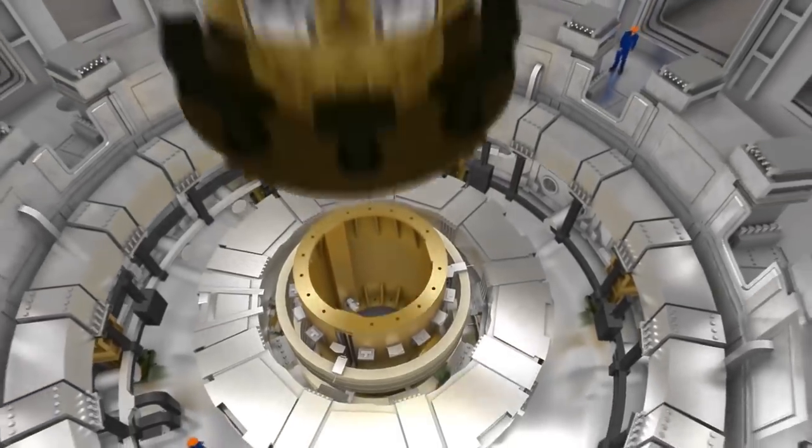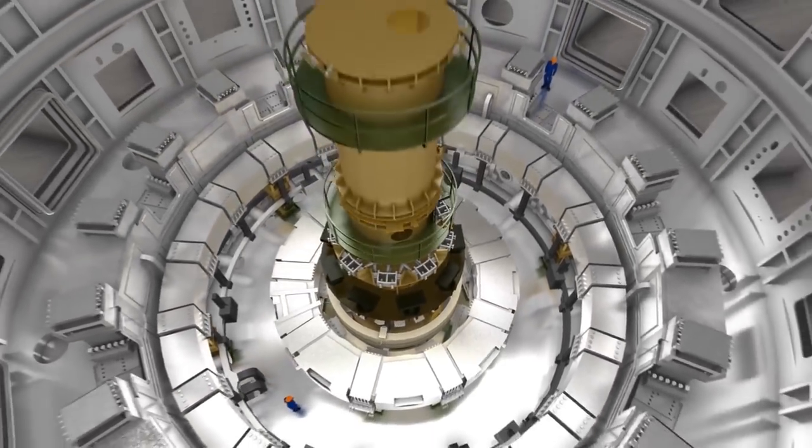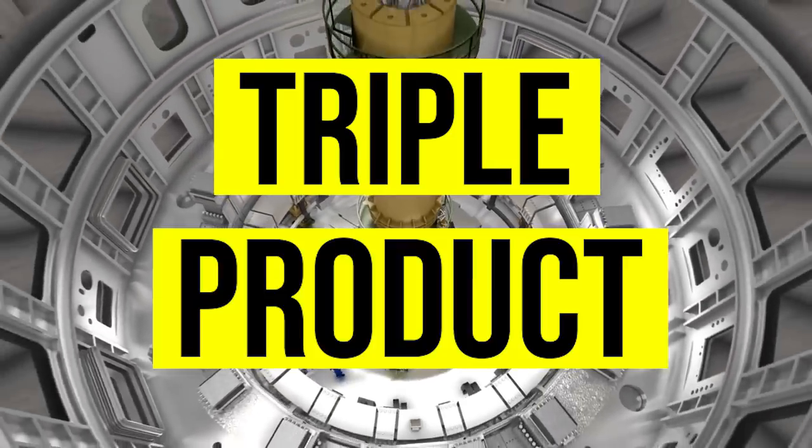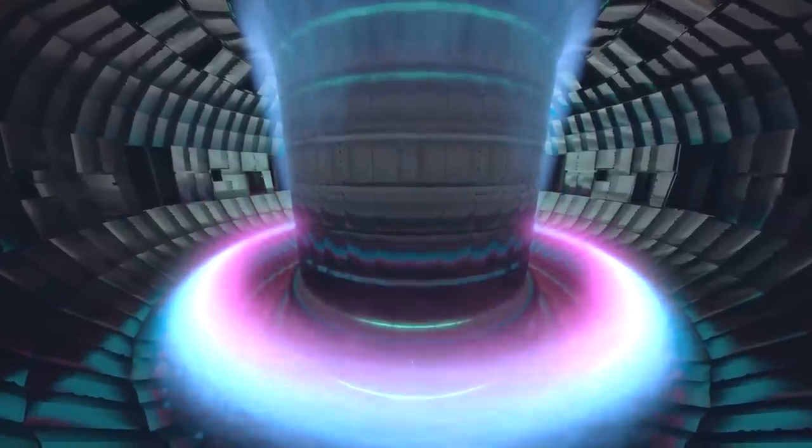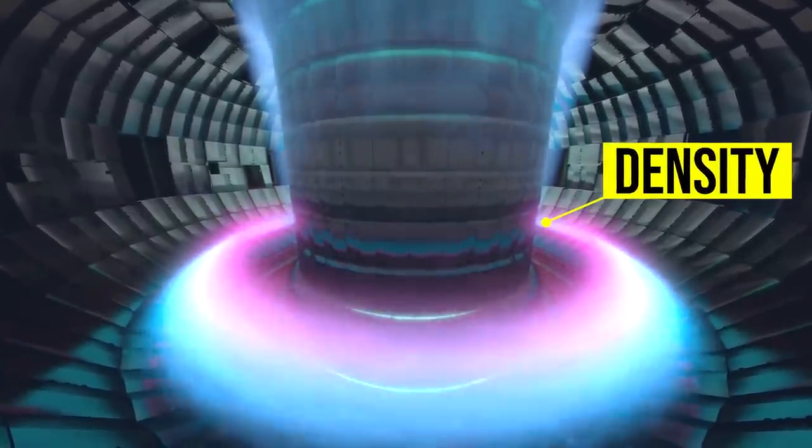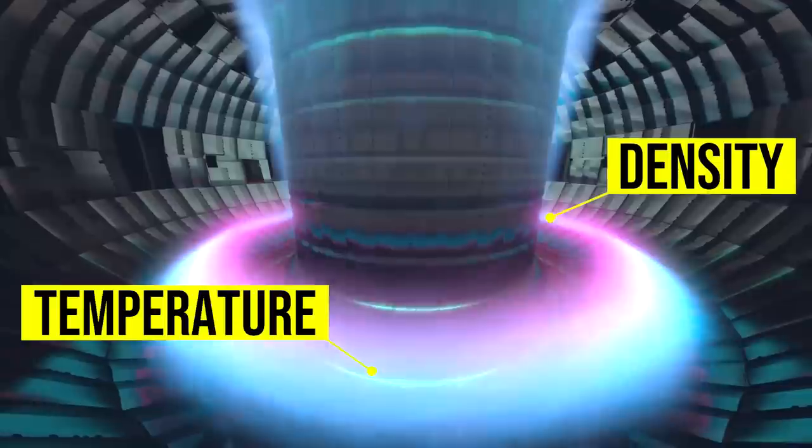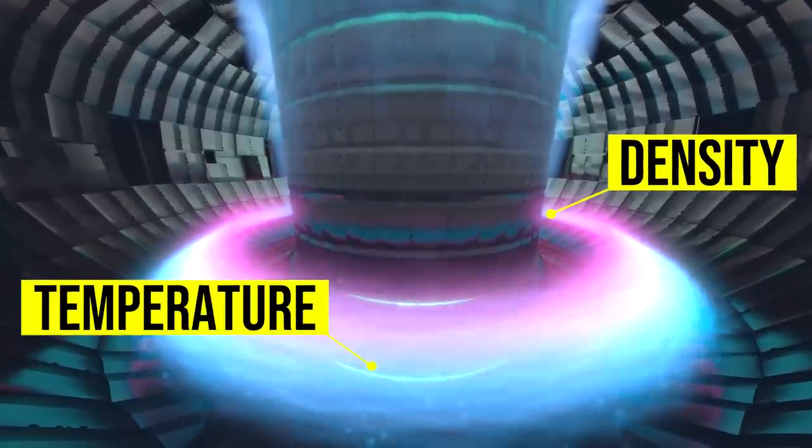The main objective that I'd previously mentioned is then to optimize something known as the triple product. This triple product is a combination of the density of ions in the plasma, the plasma temperature, and the energy confinement time.